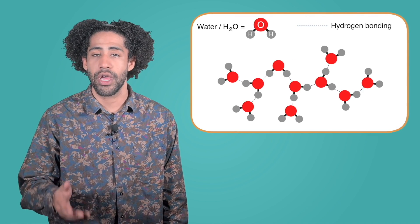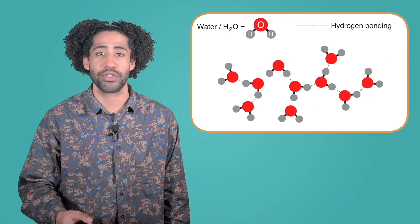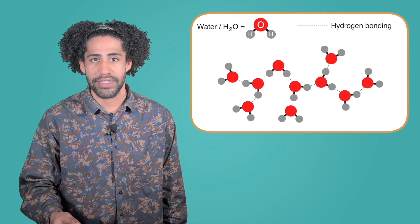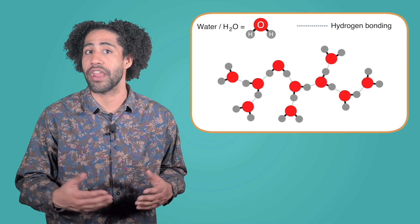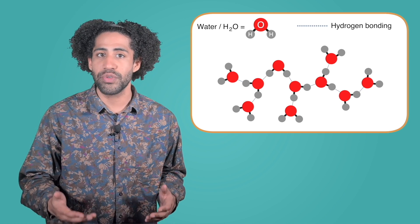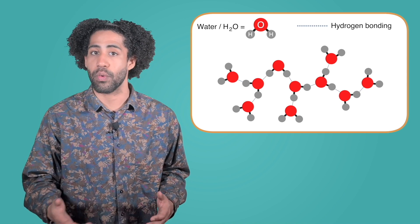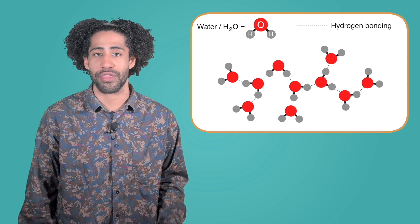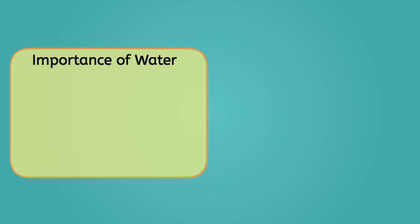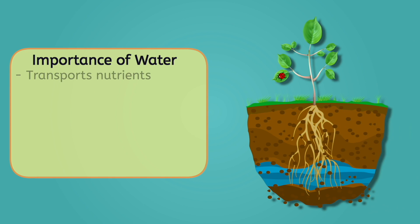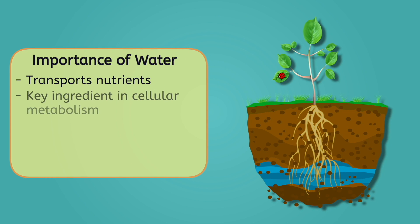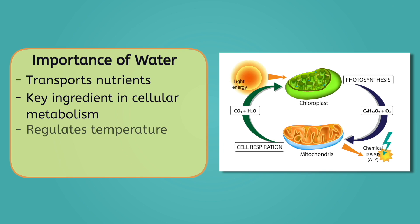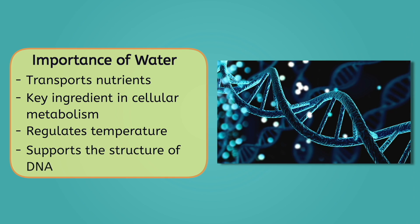As you might recall from one of our previous lessons, water's unique structure and special hydrogen bonds allow it to stick to itself and other polar molecules. These unique traits make water essential to life on Earth. Water helps transport nutrients, it acts as a key ingredient in cellular metabolism, it regulates temperature, and it supports the structure of DNA in living things.